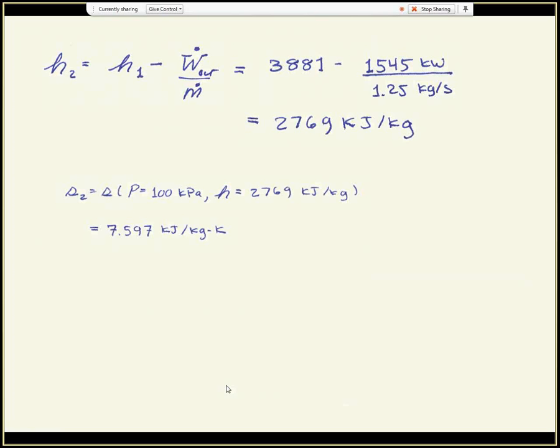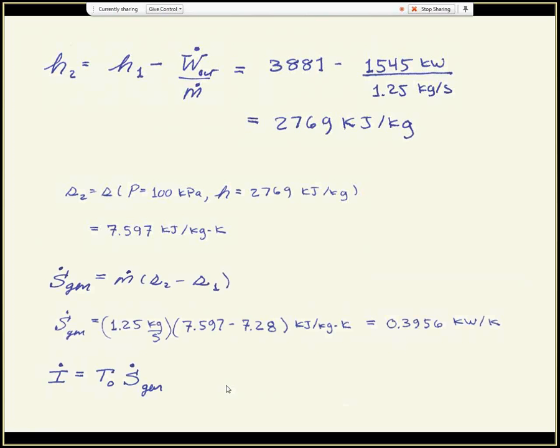And so, now I have all of my exit properties, H2 as well as S2. I can plug S2 and S1 into my entropy generation, find that it is 0.3956 kilowatts per Kelvin, and then I multiply that by the temperature of the surroundings, 300 Kelvins, to get my irreversibility. So take notice of one very important piece of this calculation. That temperature of the surroundings must, absolutely must, be in Kelvin. It cannot be in degrees Celsius. Whenever you see a temperature by itself, chances are that you need an absolute temperature scale, and not a relative one. So in any case, I have just a little bit under 119 kilowatts worth of irreversibility in this turbine.